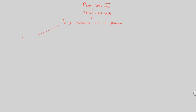The first type is known as a sieve tube element, or STE. First of all, are they alive or dead at maturity? They are alive at maturity. I suggest labeling out all the ones that are alive on one page and all the ones that are dead on another, so you can clearly see the distinction between alive and dead plant cells.